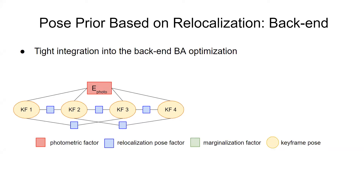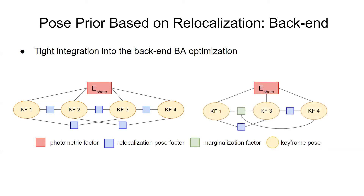We further propose to tightly integrate information from a pre-built map into the sliding window bundle adjustment optimization. On the slide, we demonstrate a simplified example with four keyframes in the form of a factor graph. The newly introduced pose priors derived from relocalization estimates are shown as factors in blue. The photometric factor corresponds to the energy term introduced in the original DSO work by Engel et al. To keep the size of the sliding window fixed, keyframes are marginalized using the Schur complement technique. In this case, we keep the residual energy, where keyframe II and its constraints are replaced by the marginalization factor shown in green.